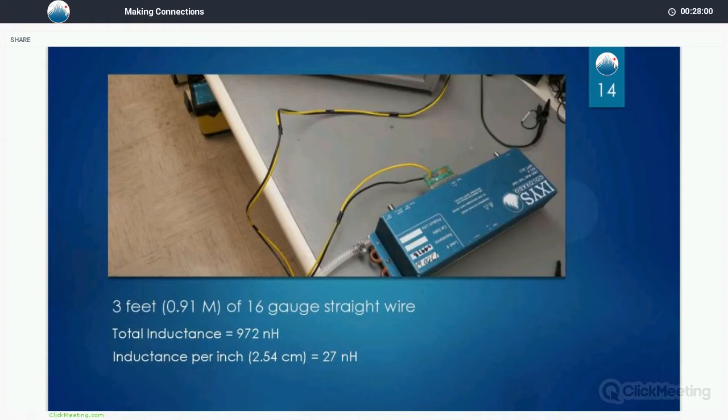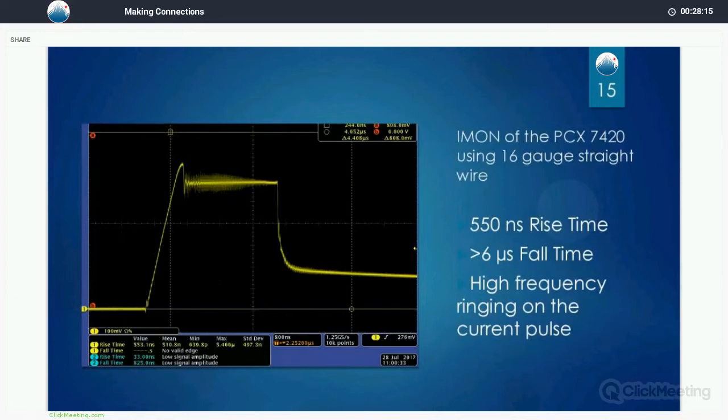Here's straight wire. The whole three feet of straight wire not twisted together. The inductance is 972 nanohenries. Nearly a microhenry of inductance. And let's see what that gives us. Overshoot and a very slow rising edge. 550 nanoseconds of rise time. A six microsecond fall time. An overshoot followed by some kind of grassy looking resonance taking place at the top. So, not a good application.